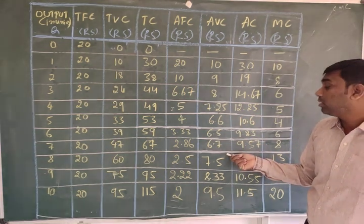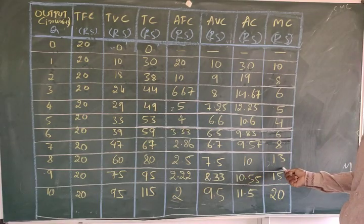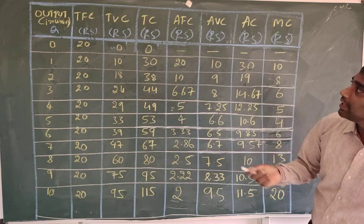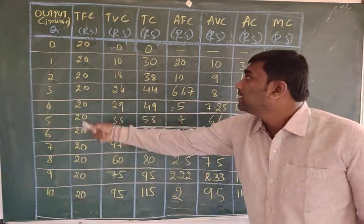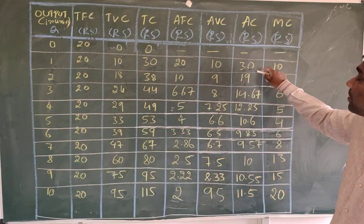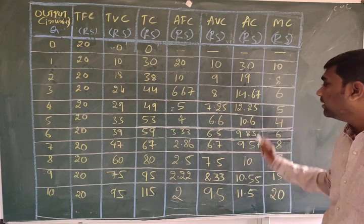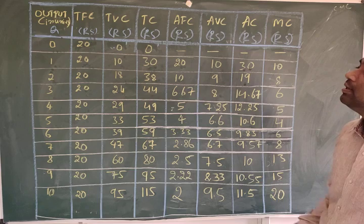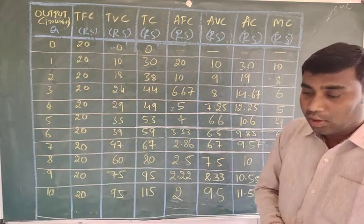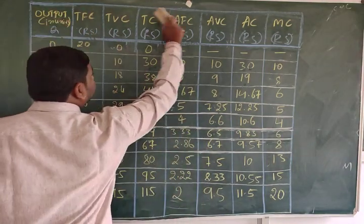After a certain level, when AVC starts increasing, marginal cost is also increasing more than AVC. When output is increasing, average cost is decreasing. This is the expression about the short-run cost table. This is the short-term cost.